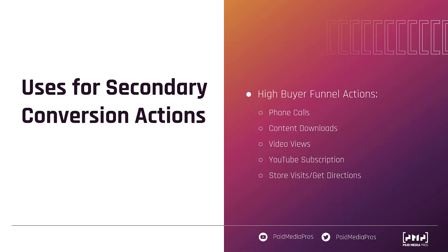To help illustrate this, I want to give a couple of groups of examples of conversion actions you might use as secondary priority optimization actions. The first group are actions that are too high in the buyer funnel but still show some directional engagement of the customer with your brand. The first two are phone calls and content downloads. In a lead generation business, both could be a lead or they could not be a lead, depending on what type of gating you have on your content and how frequently phone calls turn into leads.